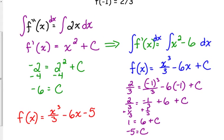The second derivative of that function is 2x, and it satisfies those two initial conditions they gave us. Really, it's no different than the first two examples — we just had to do it twice because we started at the second derivative. We had to find a particular solution twice.